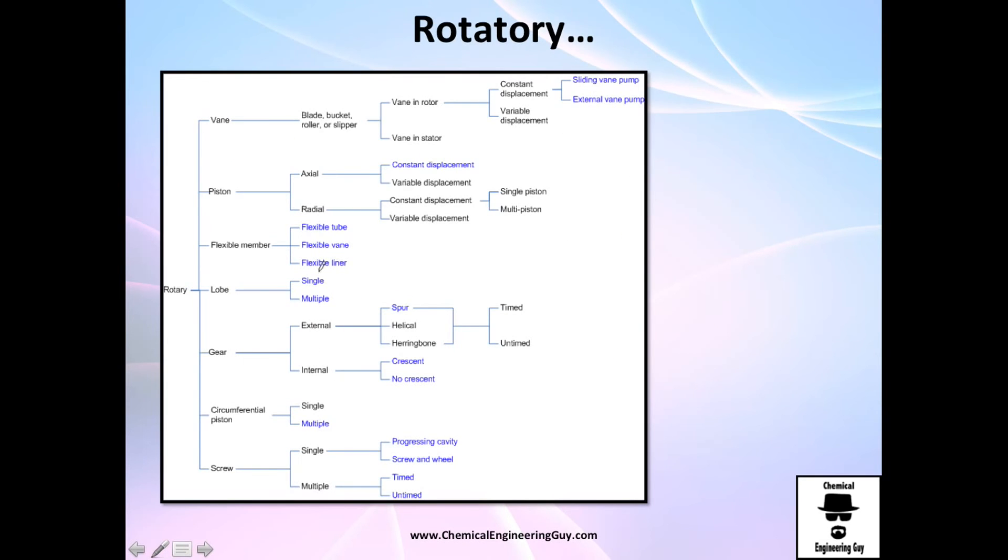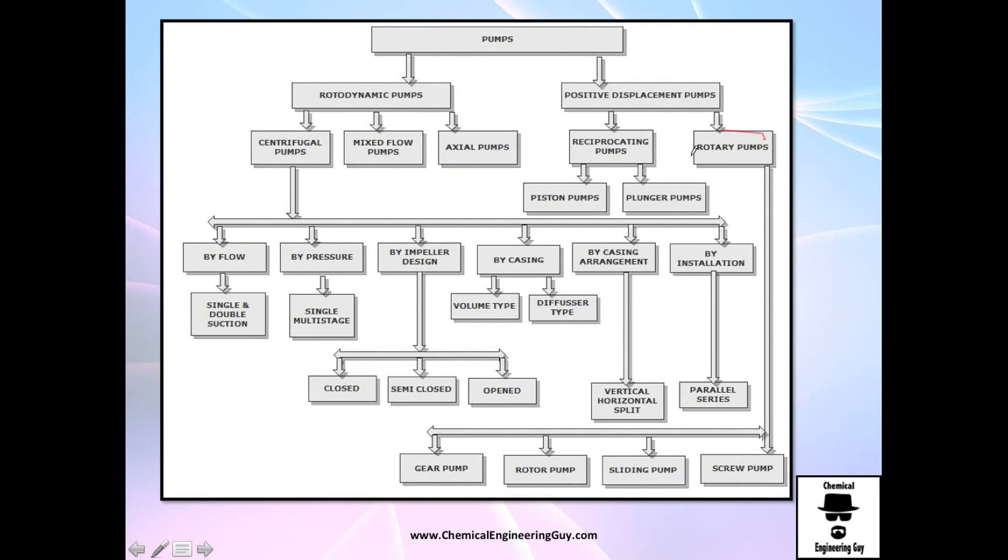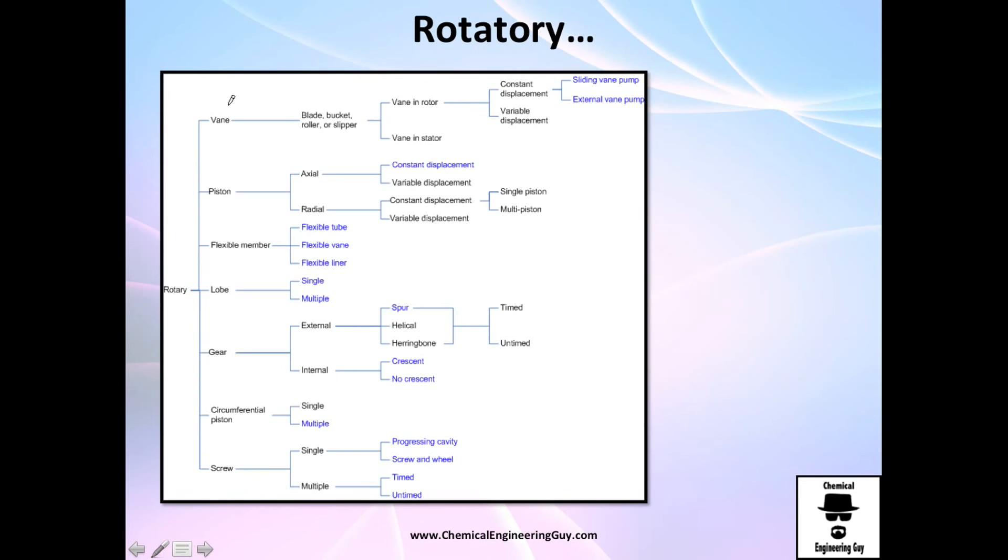So for rotatory, we have many. Rotatory right here, rotatory pumps. So let's analyze. We have vane pumps, piston pumps, lobe pumps, gear pumps, screw pumps. The most common ones.